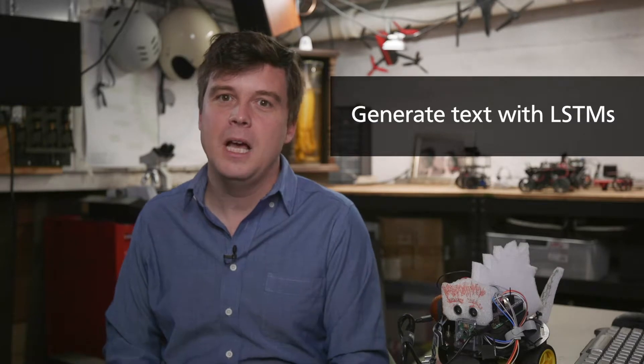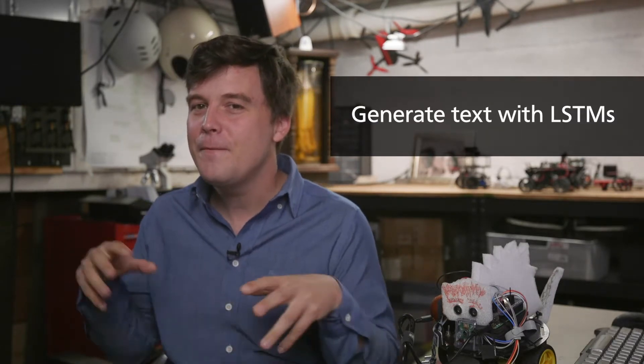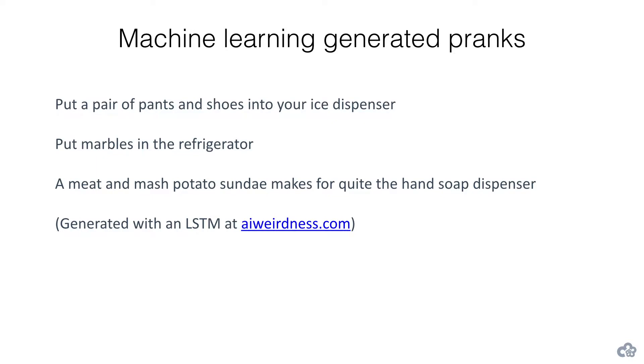In this video, we're going to do a really fun thing, which is I'm going to teach you how to generate text with LSTMs. I don't know anyone that doesn't find this compelling, so if you haven't been following along, this is one which is super fun to follow along and generate your own text. I'll show you one of my favorite examples — there are so many of them — like crazy gerbil names, band names, or human names generated by machine learning. In this case, it's machine learning generated pranks, and you can find more of them on aiweirdness.com.